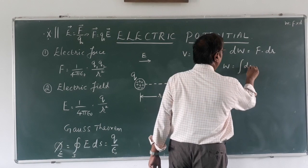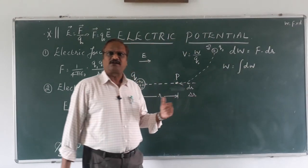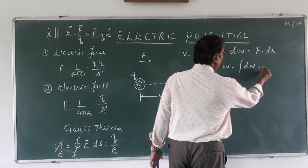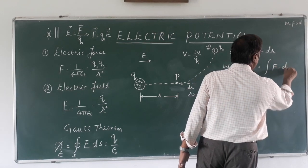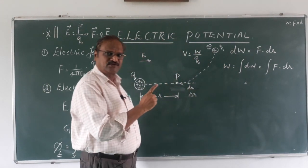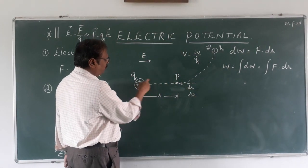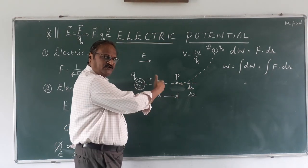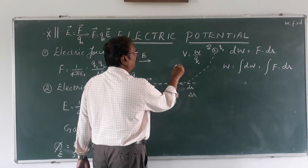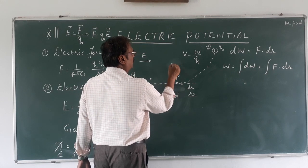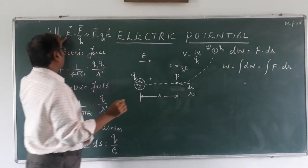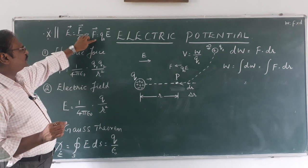Total work done is equal to integral of dW — integration stands for summation, adding up so many small quantities — which is equal to integral of F into dr. Now we must be careful: the force is from a positive charge and this is a positive test charge, so it is repulsive. But we are doing work against the electric field, so we apply a force in the opposite direction, which is minus q naught into E.